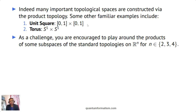For example, the unit square, the torus — the donut shape — is also a product: it can be seen as a product of the circle with itself. And if you take the product of the circle n times, then you will have the n-torus. As a challenge in terms of products, I encourage you to take products of some interesting subspaces of Rn.